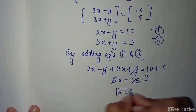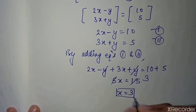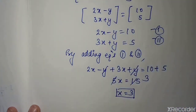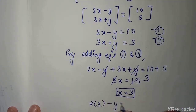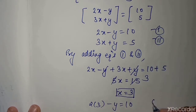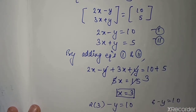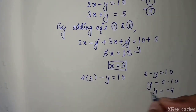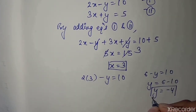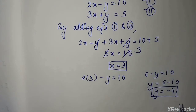So x equals 3. Now substituting x equals 3 into the first equation: 2 into 3 minus y equals 10, so 6 minus y equals 10, therefore y equals 6 minus 10, so y equals minus 4. We have our two values: x equals 3 and y equals minus 4. I hope you understood this question. Now let's see the next question.